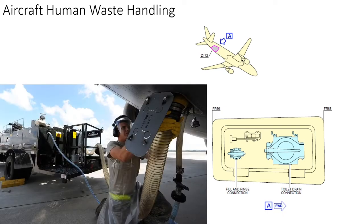This outlet is simple to understand. It has a drain line used for draining all the waste, and a flush line that is used by lavatory service equipment to inject a disinfectant solution for rinsing the waste tank.